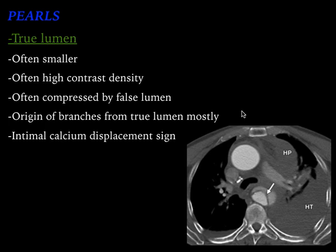The most important feature of the true lumen is that it is usually smaller in size. You can see here this is the true lumen, which is slightly smaller in size. It often has high contrast density — you can appreciate the contrast density here. The false lumen has less contrast density, and the true lumen is compressed by the false lumen. Also, when the dissection flap extends to the branches of the aorta, the origin of the branches — such as the celiac trunk or SMA — usually arises from the true lumen. Wherever they are communicating, that should be the true lumen in most cases.